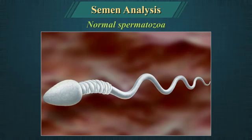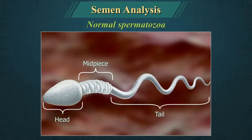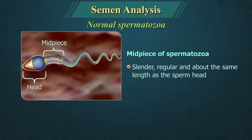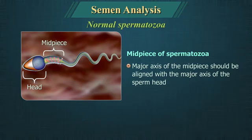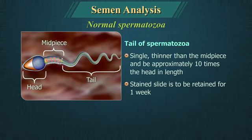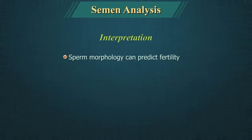A normal spermatozoon consists of a head, midpiece and tail; all parts must be normal for the sperm to be considered normal. All borderline forms should be considered abnormal. The head should be smooth, regularly contoured and generally oval in shape. The midpiece should be slender, regular and about the same length as the sperm head, with its major axis aligned with that of the sperm head. The tail should be single, thinner than the midpiece and approximately 10 times the head in length. The stained slide should be retained for 1 week.